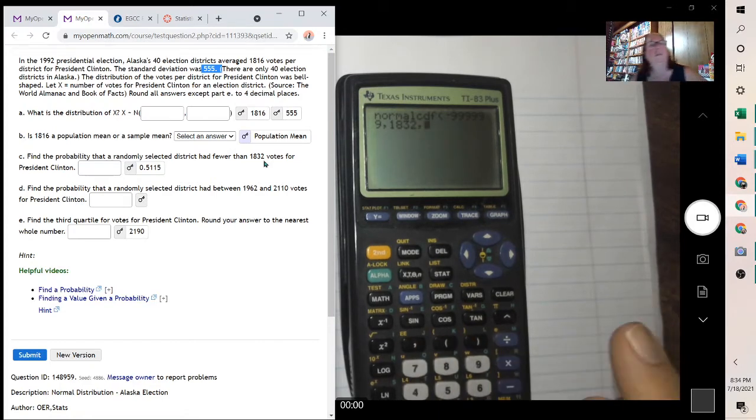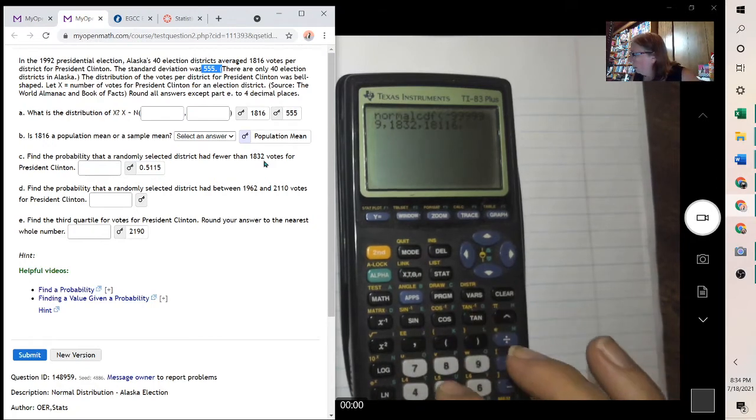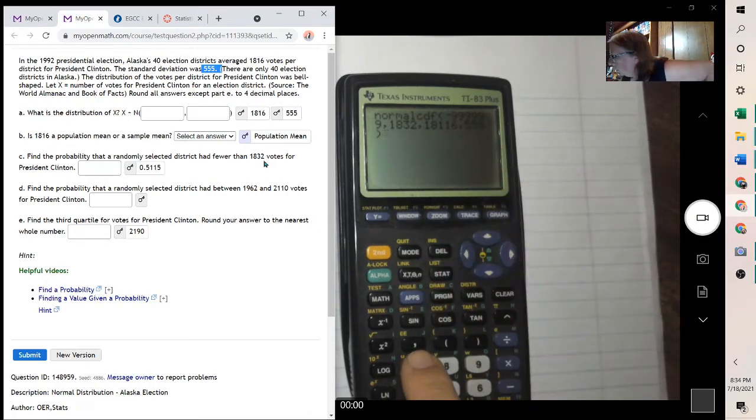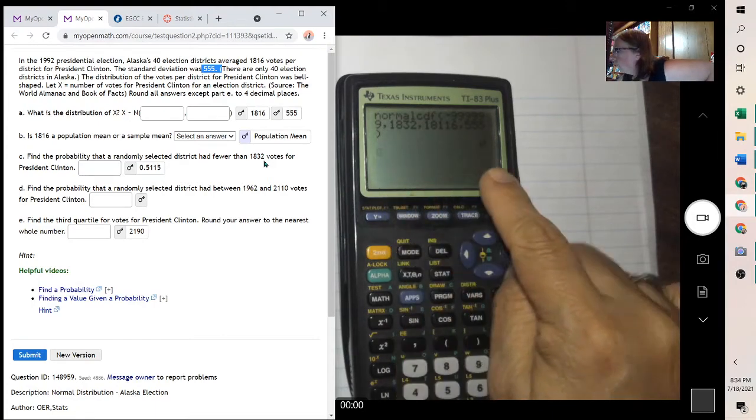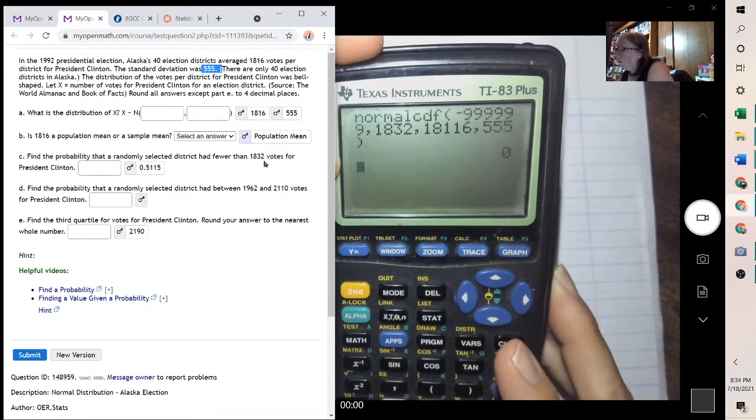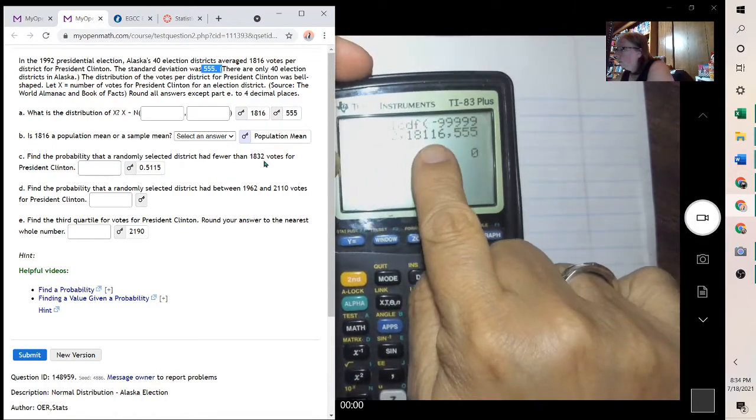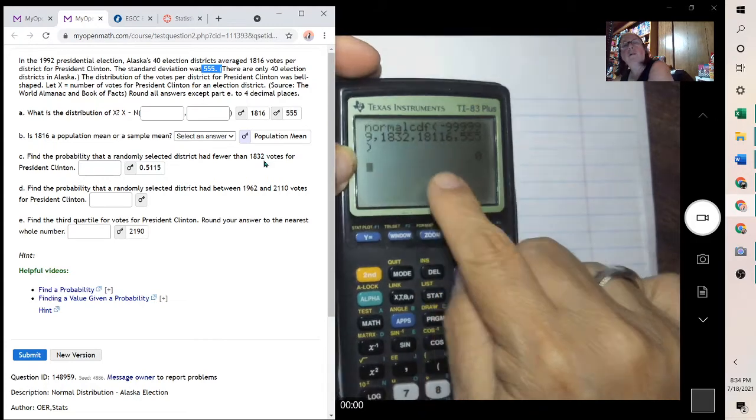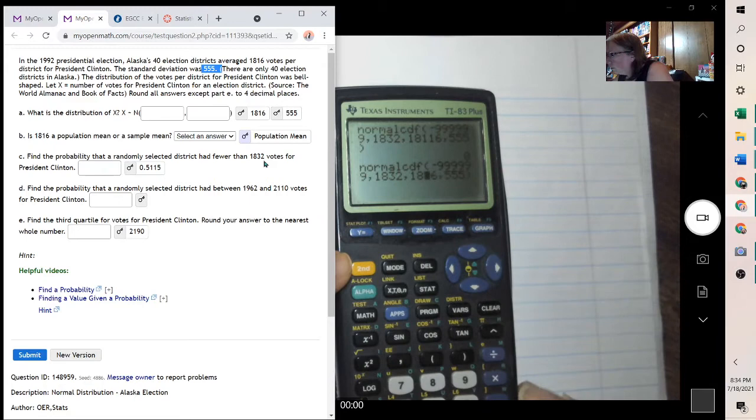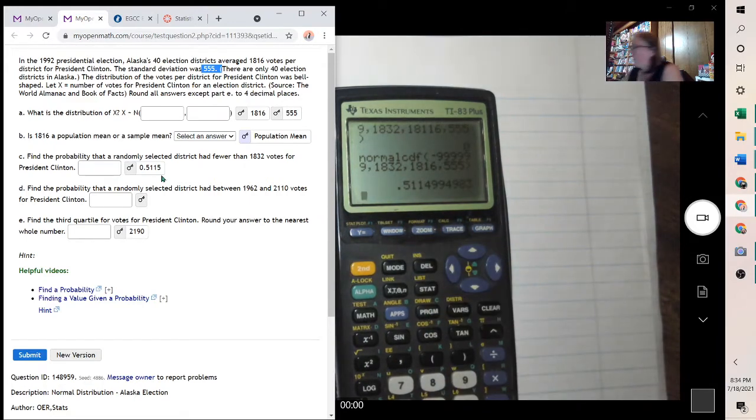Then your mean, which was the 1816, and the standard deviation. Now notice between each of these, you put a comma, and the comma's right here above the 7. And when you hit enter, oh, I hit something wrong. Right here I typed that wrong. I hit two 1s. There we go, 0.5115.